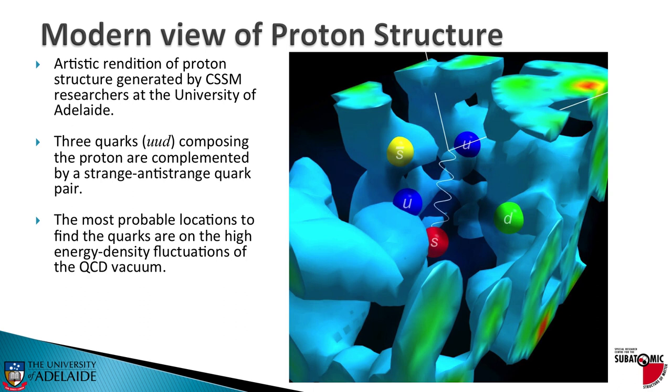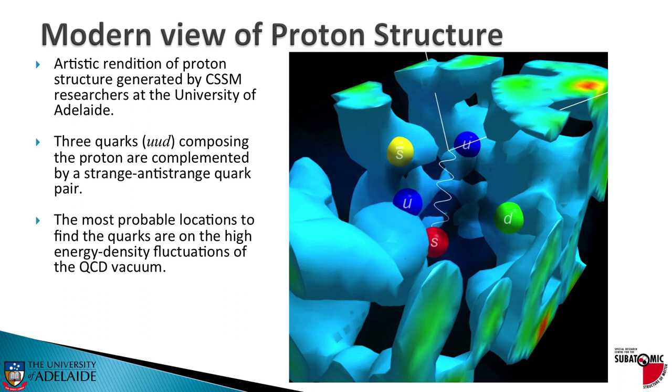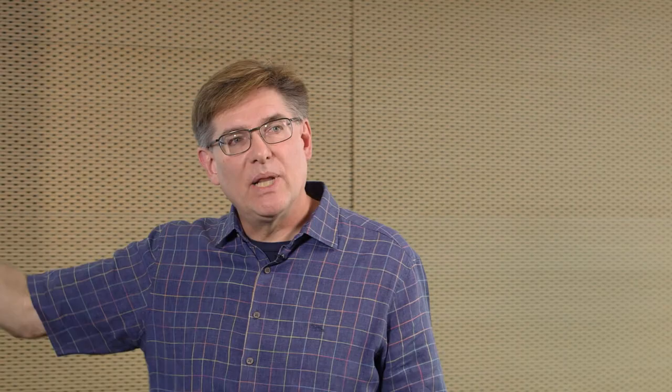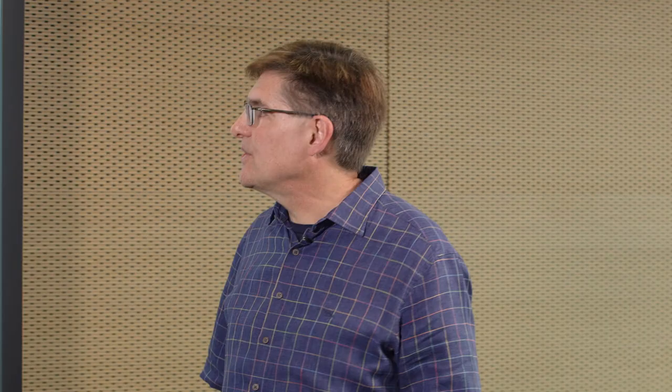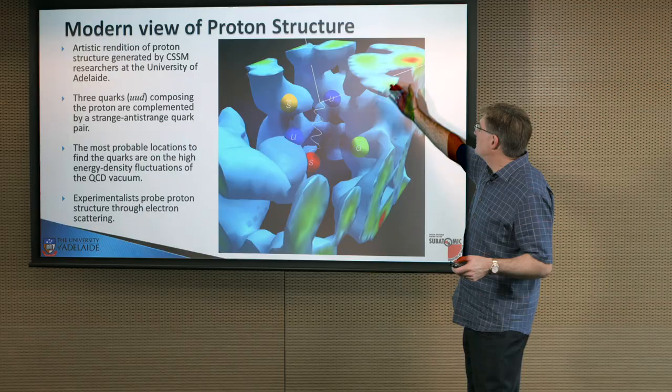What's this? This is how experimentalists investigate the structure of the proton. The straight line here is an electron. It doesn't couple directly to the gluon field, so it just plows straight through. Same with the photon. Photon comes in here, hits a strange quark, so experimentalists can learn about how the strange quarks contribute to proton structure. And of course, they measure this outgoing electron and learn about structure through that measurement.